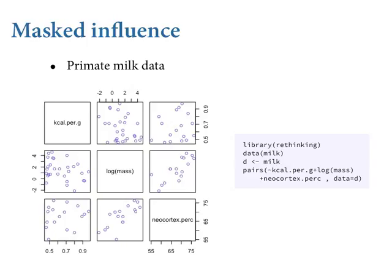What I want you to see: at the intersection of log mass and neocortex in the pairs plot, log mass on the vertical and neocortex percent on the horizontal — they're positively correlated, pretty strongly. It's not clear there's any clear bivariate correlation between log mass and kilocalories per gram, or neocortex percent and kilocalories per gram. Nevertheless, there's a pretty strong relationship between both of these variables and the outcome. This is a classic masking effect where they're correlated in different directions.